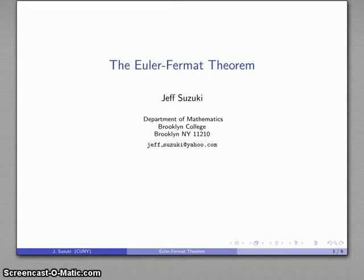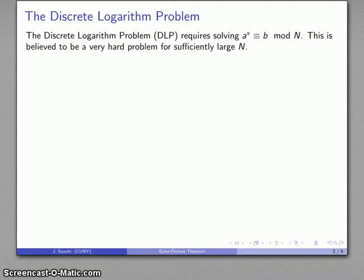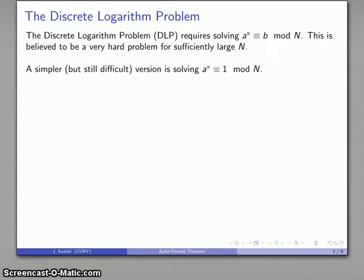This also goes back to the discrete logarithm problem (DLP), where we're trying to solve the congruence a^x ≡ b mod n. This is a nonlinear congruence believed to be a very hard problem if n is sufficiently large. Let's make our problem a little easier and try to solve a^x ≡ 1 mod n.